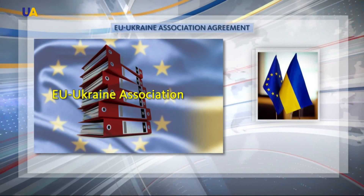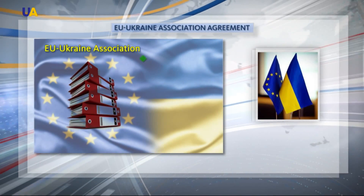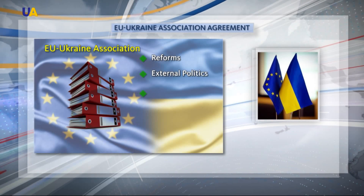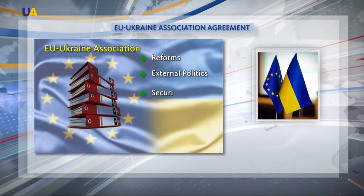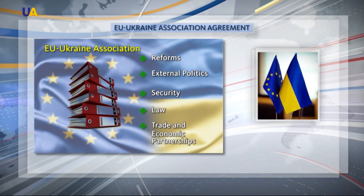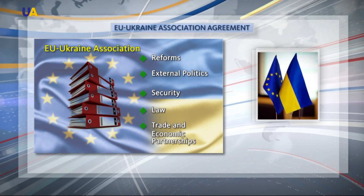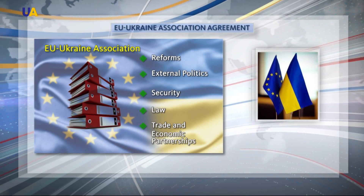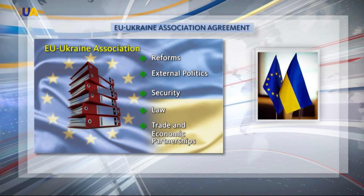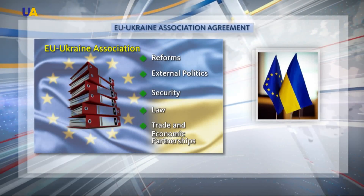The EU-Ukraine Association Agreement contains seven sections and makes up more than a thousand pages. This is a document which regulates Ukraine's gradual integration into the European Union. It involves reforms which are to be implemented in the country, especially regarding foreign policy, security and justice. And most importantly, it provides for trade cooperation — the free trade zone that Russia was concerned about.